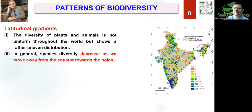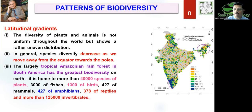Why does species diversity decrease? It is simple: as you move away from the equator, temperature decreases, light intensity decreases, and so does rainfall. The general rule is that as we move away from the equator towards the poles, species diversity decreases. The tropical Amazon Rainforest in South America is the biggest biodiversity hotspot, but today it faces significant biodiversity loss. It contains around 40,000 species of plants, 3,000 species of fishes, 1,300 species of birds, 427 mammals, equal number of amphibians, 378 reptiles, and more than 1,25,000 invertebrates.